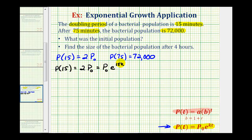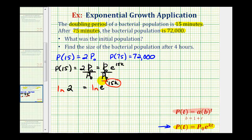Now we need to solve this equation for k. If we divide both sides by p sub zero, the p sub zeros simplify out, leaving us with the equation two equals e raised to the power of 15k. We can solve for k by taking the natural log of both sides and applying the power property on the right to move 15k to the front. So we have natural log two equals 15k times natural log e. Since natural log e equals one, we just divide both sides by 15 to determine the approximate value of k.